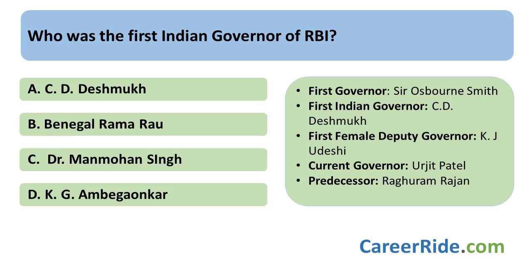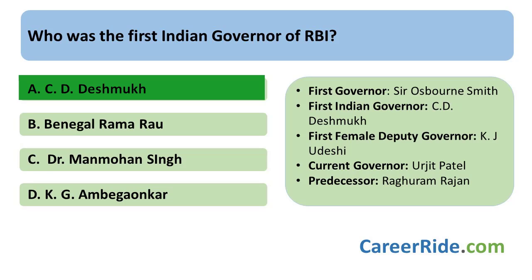Who was the first Indian Governor of the Reserve Bank of India? The first Governor of the Reserve Bank of India was Sir Osborne Smith, but the first Indian Governor of the Reserve Bank of India was Sir C.D. Deshmukh, or Chintaman Dwarkanath Deshmukh. He helped the smooth transition of the Reserve Bank of India from a private organization to a statewide organization. He was appointed in the year 1943.